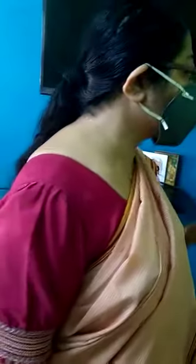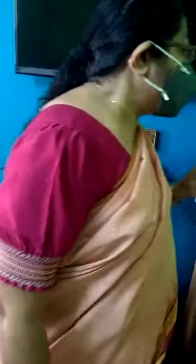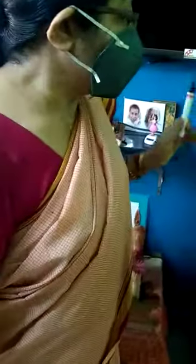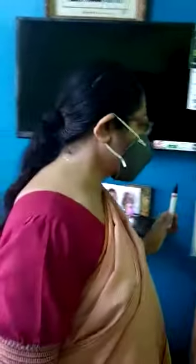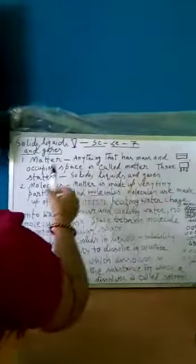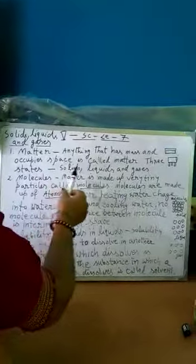Now you have to learn about matter, molecule, and atom from lesson 7. What is matter? Anything that has mass and occupies space is called matter.